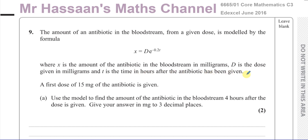They say a first dose of 15 milligrams of the antibiotic is given. Use this model to find the amount of antibiotic in the bloodstream four hours after the dose is given. Give your answer in milligrams to three decimal places. Take note of that — if you write to 3 significant figures, which is the standard thing to do, you will lose marks. They mentioned very clearly three decimal places. So d = 15 milligrams.